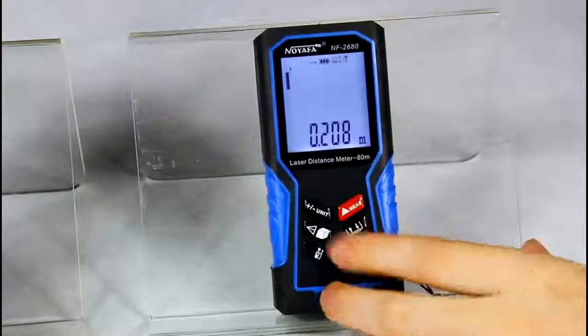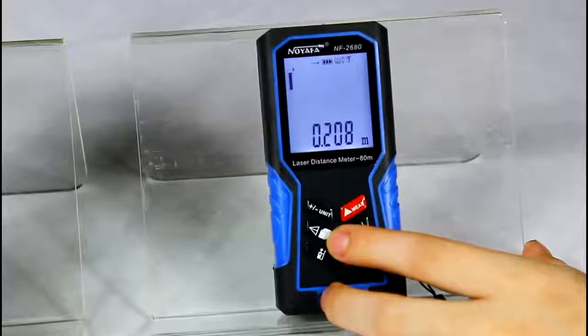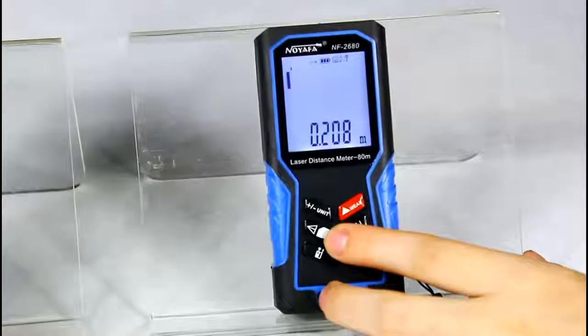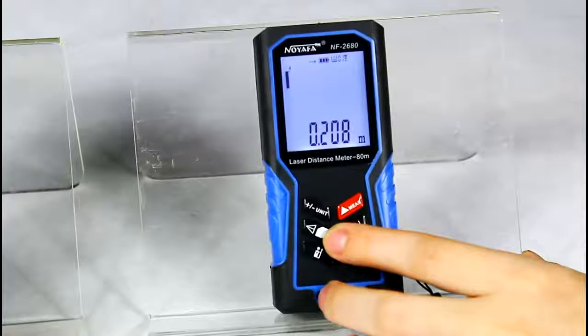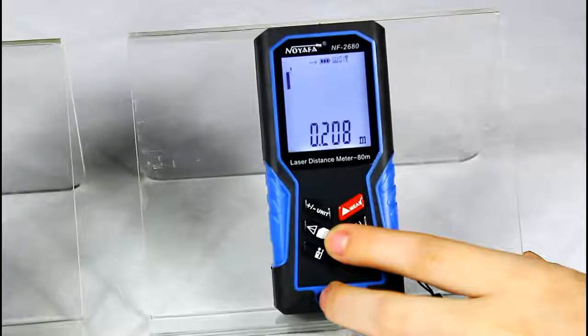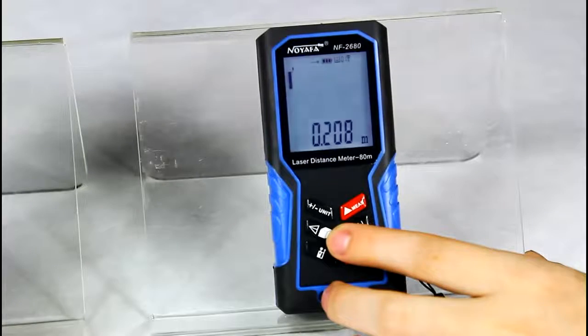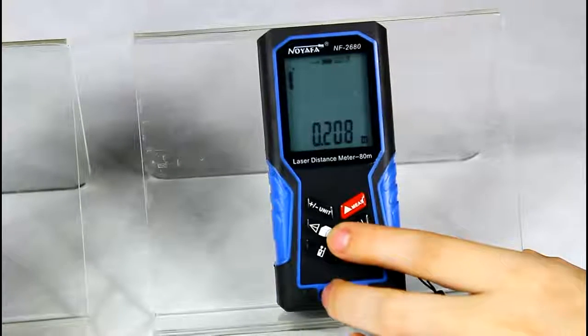This button shifts between distance, area, or volume. For example, in certain measurement modes, you can measure height via different methods.